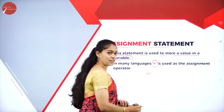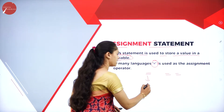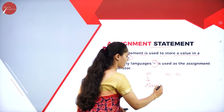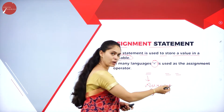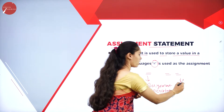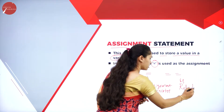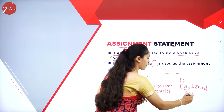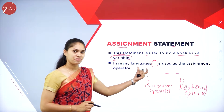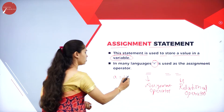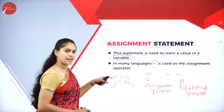The assignment operator (=) stores a value, e.g., a = 10, b = 20. The relational operator (==) compares values: a == b checks whether a equals b — if a is 10 and b is 20, the result is false; if both are 10, the result is true. Assignment always goes from right-hand side to left-hand side: a = 10, not 10 = a.